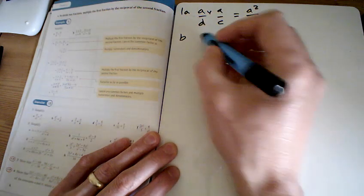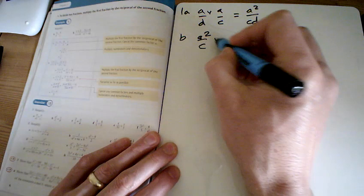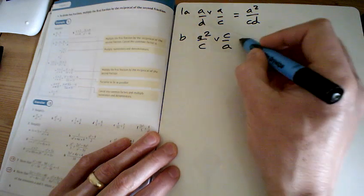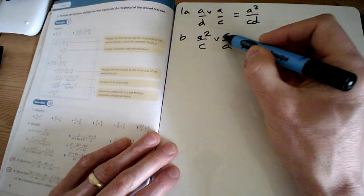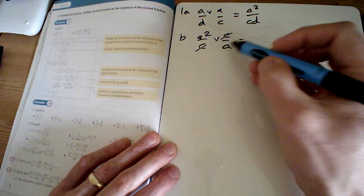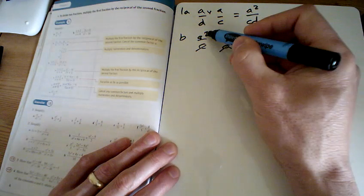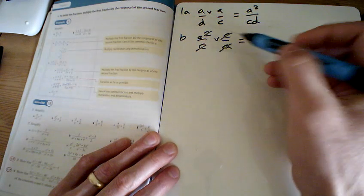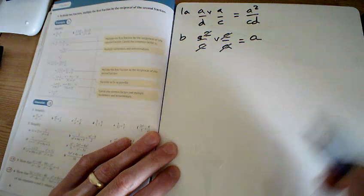For part b, we've got a squared over c times c over a, and we can do some cancelling on this. There's a c on the top, there's a c on the bottom, there's an a on the bottom, and there is a couple of a's there, so let's cancel one of them. We'll leave it just a.